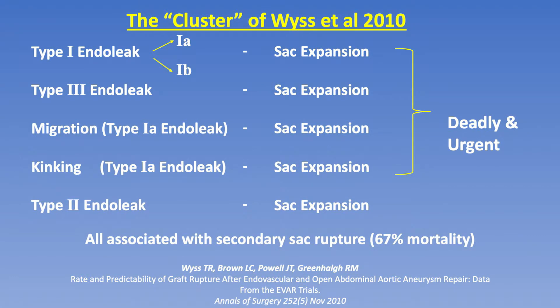This was partway through the EVAR trials in 2010 at about 10 years of follow-up, certainly patients more than eight years, and this is when some of the trouble started to occur. An analysis of the patients so far showed that sac expansion in association with secondary sac rupture was quite common.